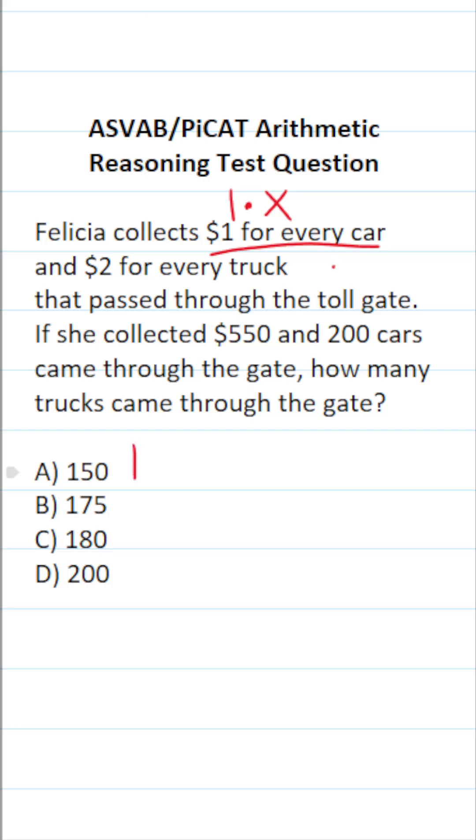So this becomes 1X plus, she collects $2 for every truck that went through the toll gate. This is going to be 2 times the number of trucks that goes through the toll gate. I'm going to let Y represent the number of trucks, so this becomes 2Y equals the total amount she collected, which is $550.